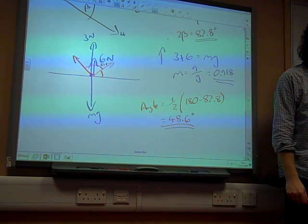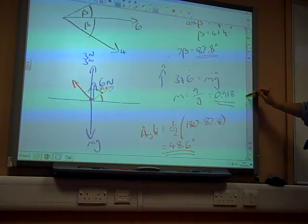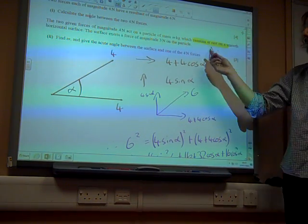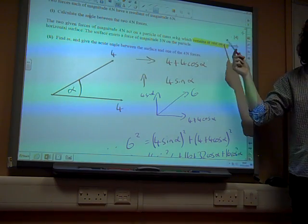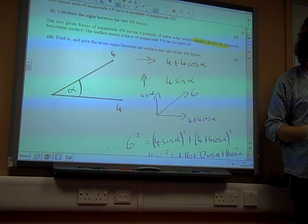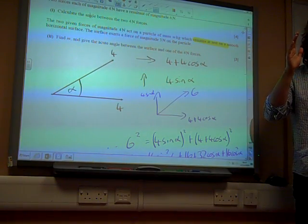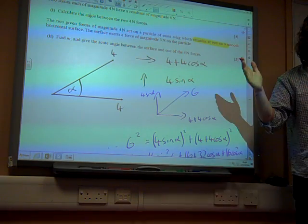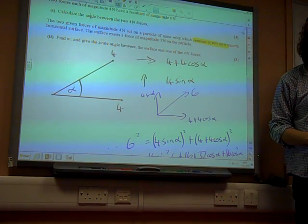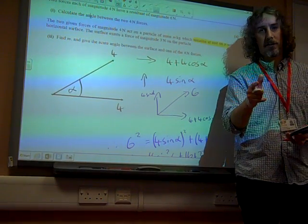Okay. Does that make sense? And, the crucial thing about this question was recognising it was just kind of slipped in there, but it was this remains at rest. That was the key thing here. That tells us that the 6 Newton force, actually, it has to be vertically upwards, otherwise it would be moving from side to side on this smooth table that it's at rest on. There we go.